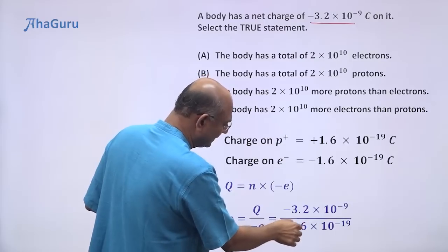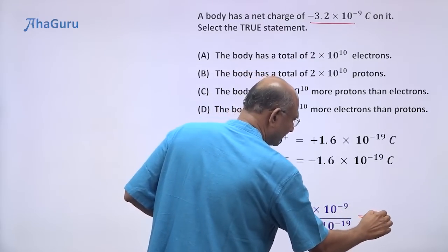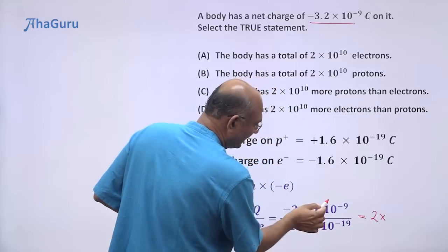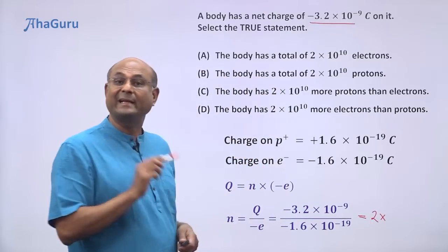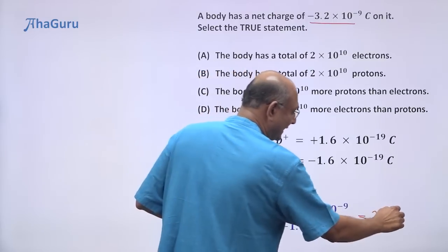So minus and minus will cancel. 1.6, 3.2, that is going to give me 2. 10^-9 by 10^-19 is 10^10. This goes up, so it's going to be 19 minus 9, so 10^10.